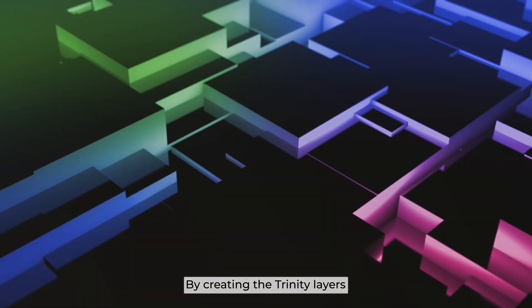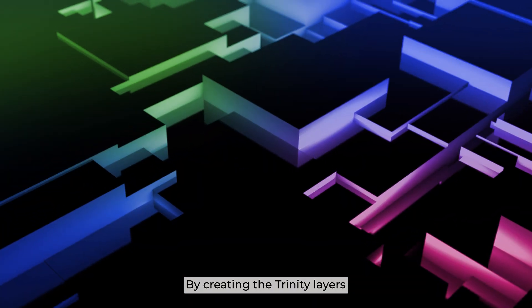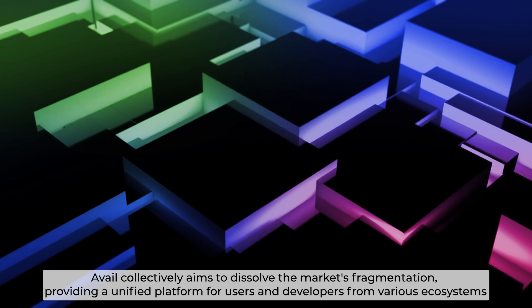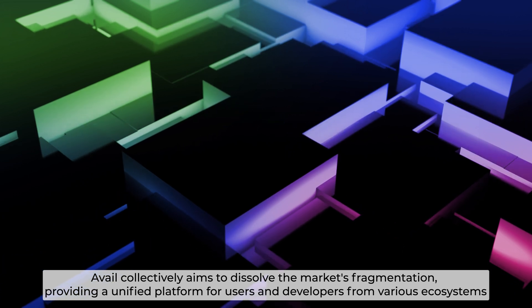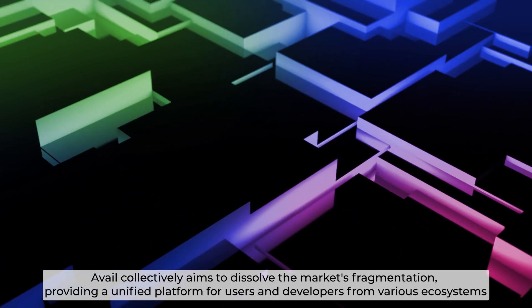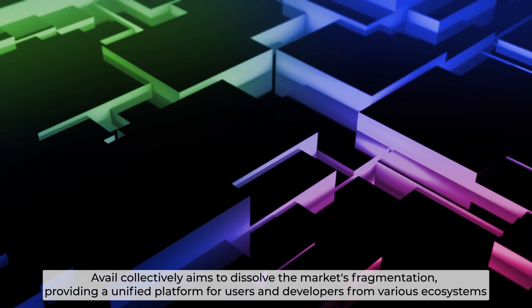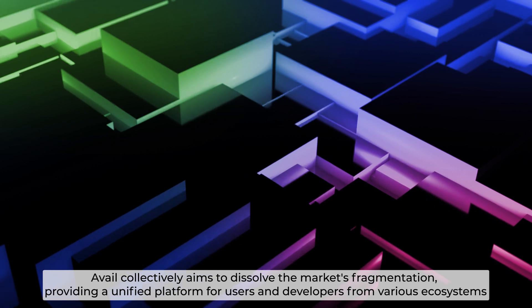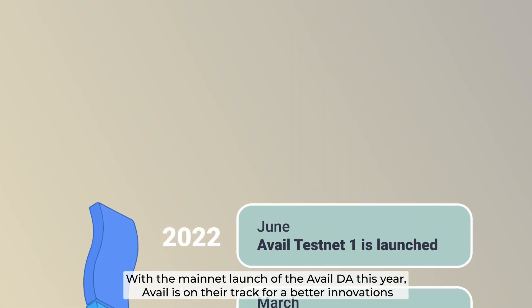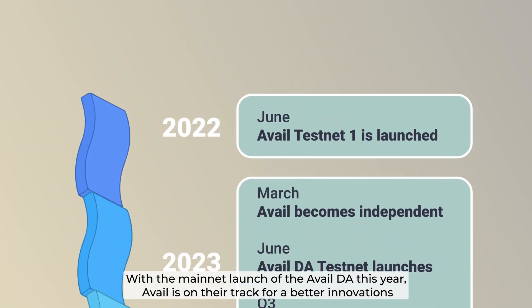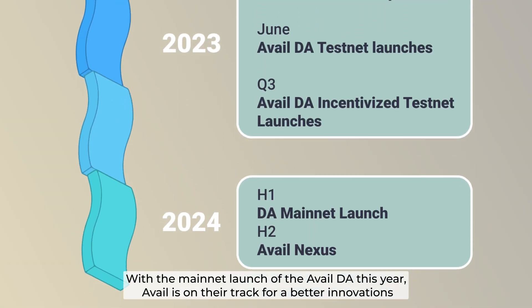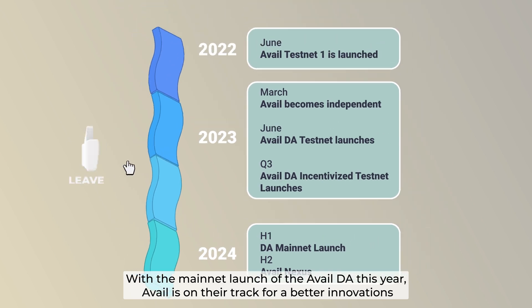By creating the Trinity layers, Avail collectively aims to dissolve market fragmentation, providing a unified platform for users and developers from various ecosystems. With the mainnet launch of the Avail DA this year, Avail is on track for better innovations.